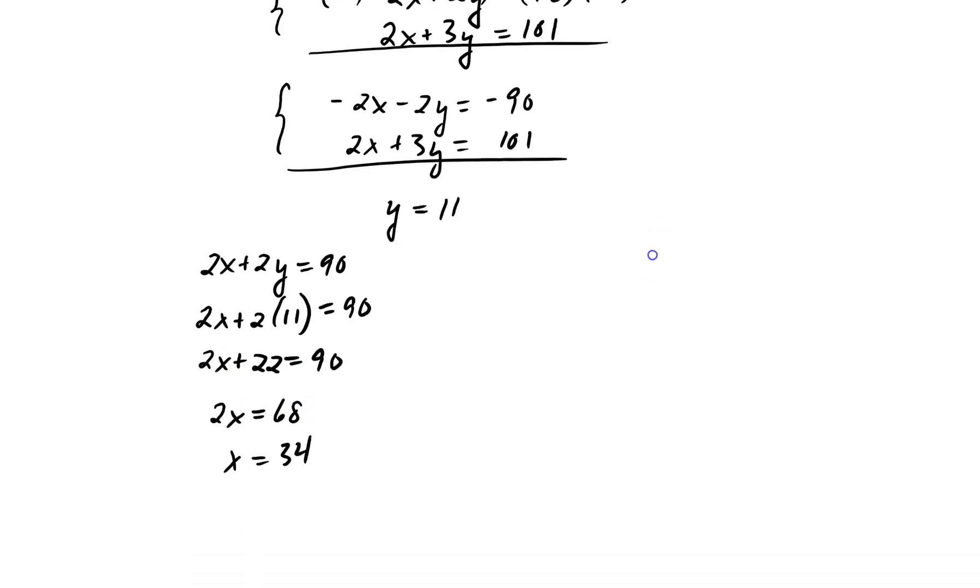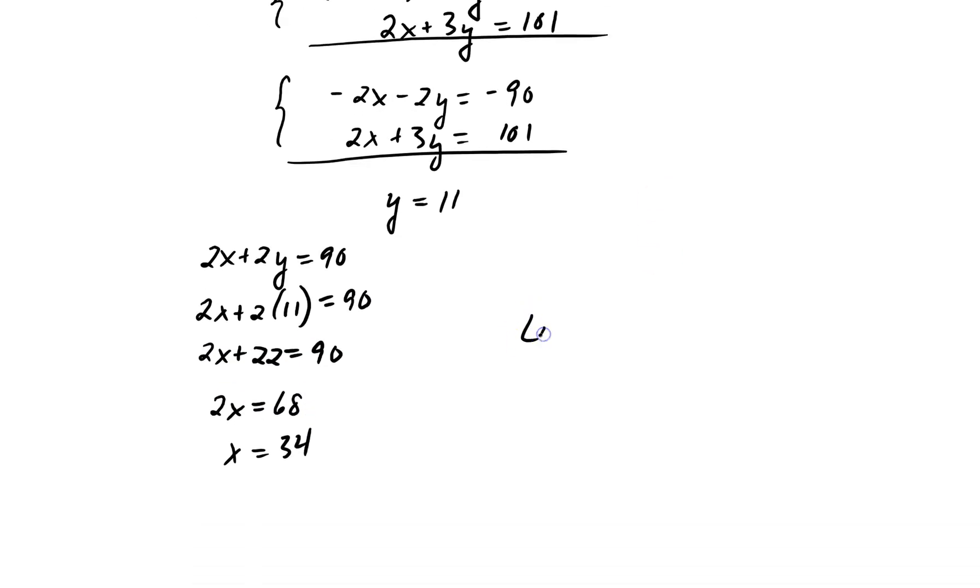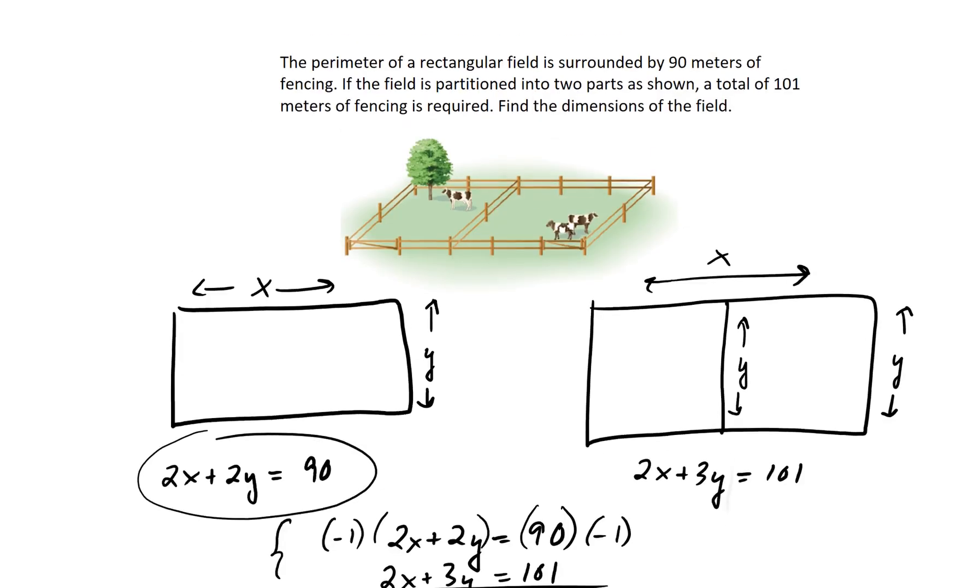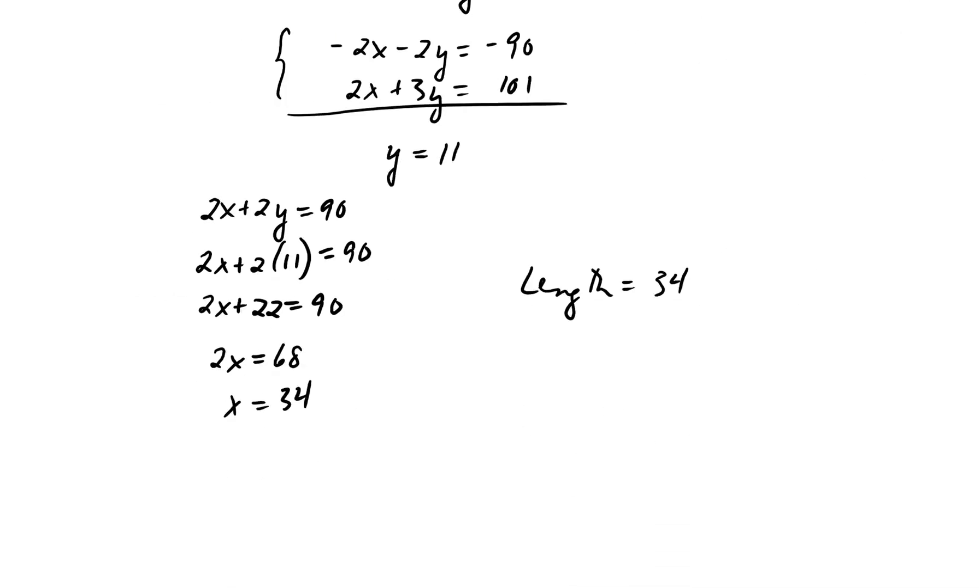Okay, so we'd say that the length of the field is 34 meters. So length is 34 meters. And the width is 11 meters. So our rectangular field is going to be 34 by 11. That would be our answer.